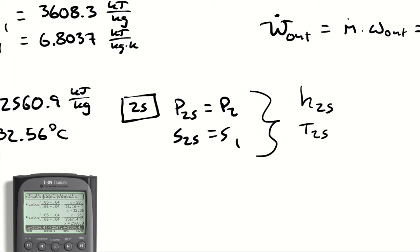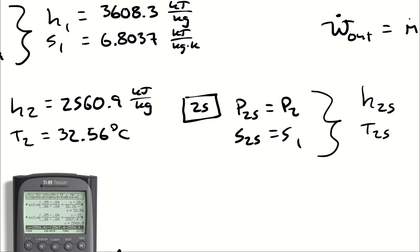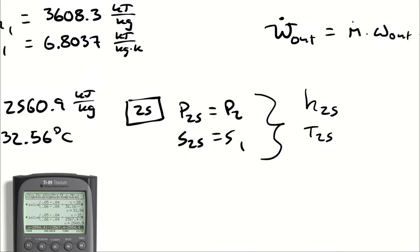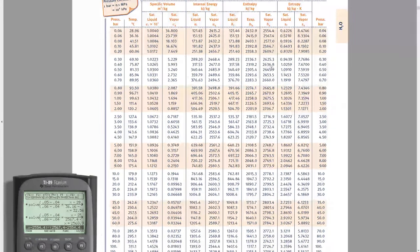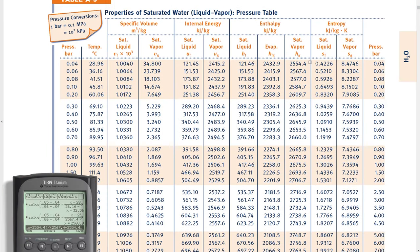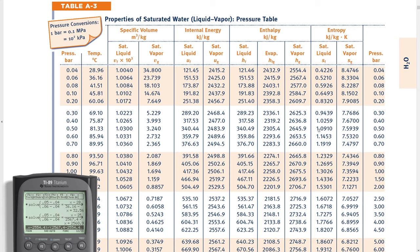So now for state 2S, I have an entropy of 6.8037 and I know that my pressure is still 5 kilopascals. So I'm going to jump back to my saturation tables by pressure. I'm going to find the correct pressure, which happens to be 0.05 bar, that same row that we were just at. And what I have to do is compare my entropy to SF and SG at 5 bar. Well, I don't know SF and SG at 5 bar, but I do know that they're going to be somewhere between 0.42 and 0.52 for SF and 8.47 and 8.33 for SG. So my S value is definitely going to be between SF and SG, which means that I'm going to have a saturated liquid vapor mixture at state 2S.